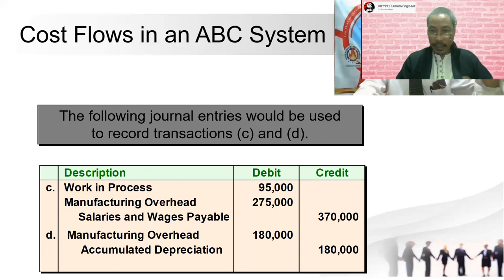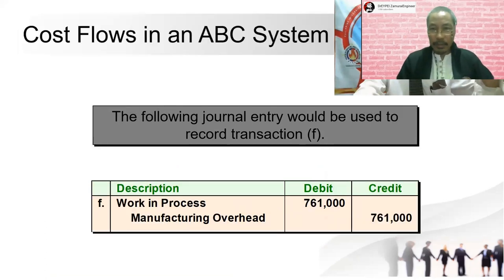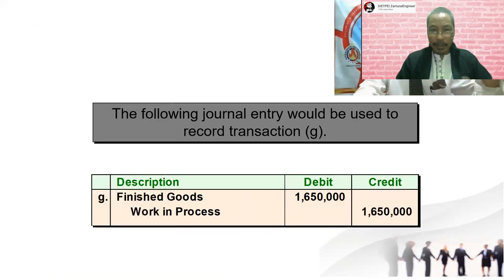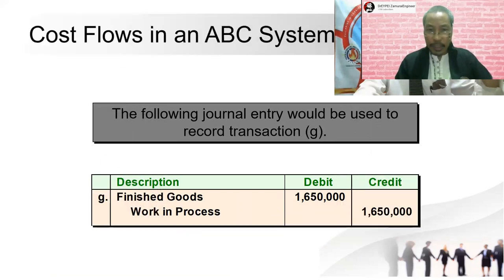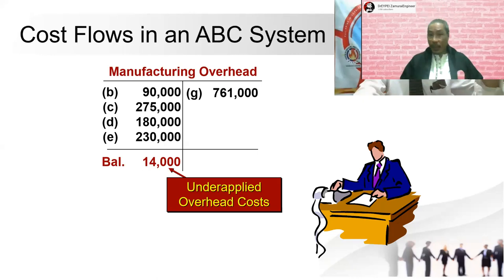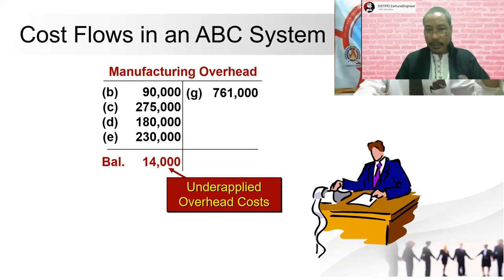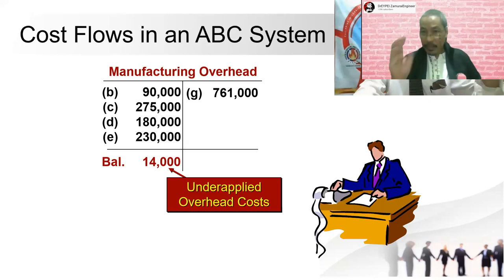So first is the transaction record, second is journal entries, and third is ledger posting. Not only manufacturing overhead — all account names have to be posted, each separately in their own ledger: accounts payable in one ledger sheet, manufacturing overhead in one, work in process in another, and so on for all account names.